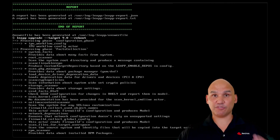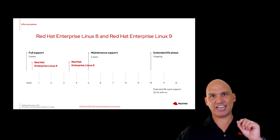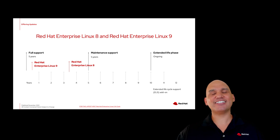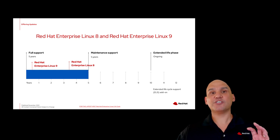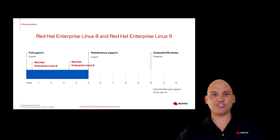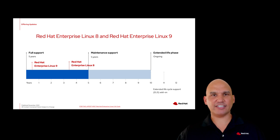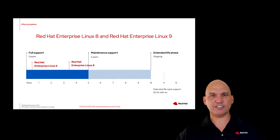Getting updates for your software is important, especially when it comes to new features, bug fixes, and very importantly, security. Red Hat Enterprise Linux has three phases for support. First is full support, which is for five years since release. Next is maintenance support, which is for five years after full support ends, and it's mostly security-related releases and lesser bug fixes or feature enhancements.